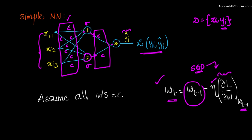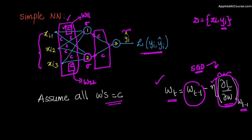If I want to update weight w11 and weight w32 — w32 connecting the third input to the second neuron — initially both w11 and w32 are the same, because everything was initialized to the same constant. The update will also be the same, because when I compute the partial derivative of the loss with respect to w for all neurons in this layer, that derivative will also be the same. Since the previous values were also the same, w11 and w32 in the second iteration are going to be identical.